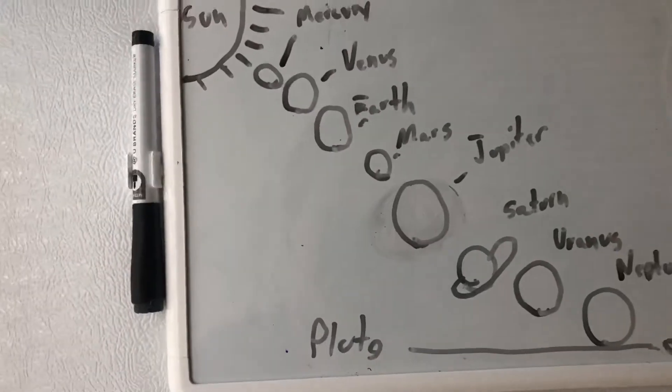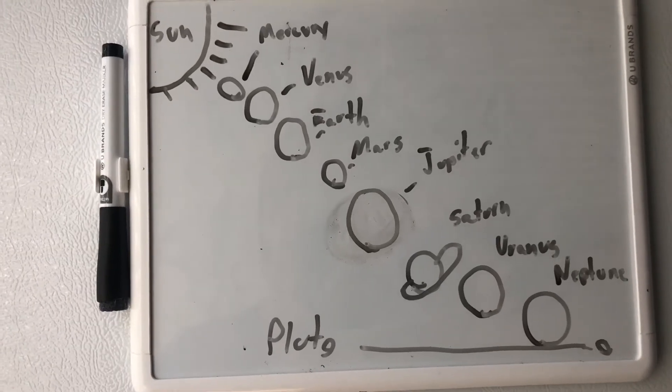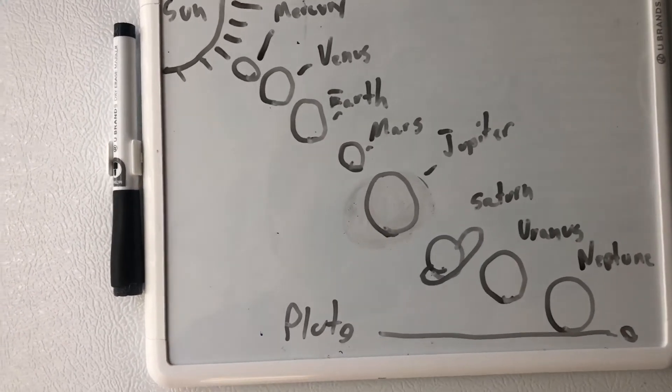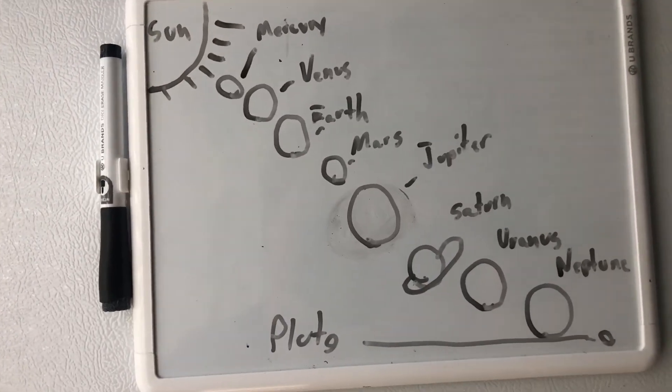So as of 2006, we only have eight planets, guys. Just in case you get a little bit of a mix-up with the information, we still have eight planets as of 2006.